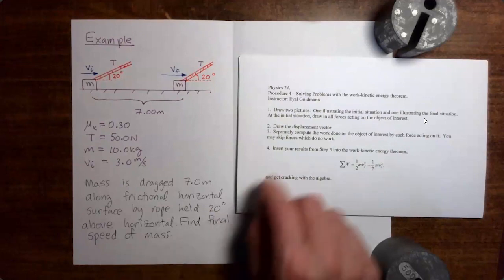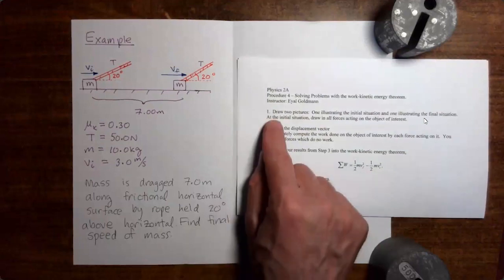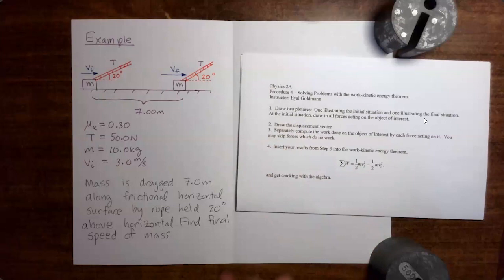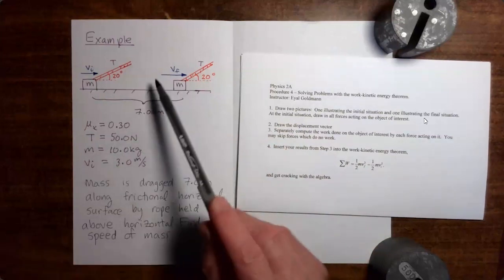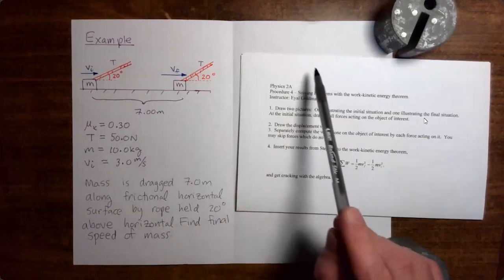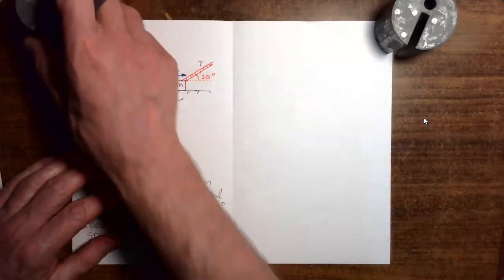So let's go to the handout and see what it tells us to do. The first step is to draw two pictures, one illustrating the initial situation and one illustrating the final situation. So we already have a figure, but we're going to start by drawing a clean figure which illustrates what's going on here.